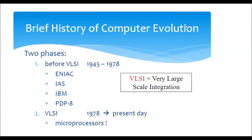Next we have the IAS machine, which was the first electronic computer to be built at Princeton. It was a binary computer with a 40-bit word, storing two 20-bit instructions in each word, and had a memory of 1024 words. The machine was started in 1946 and completed in 1951. It used electrostatic storage devices called Williams tubes, each storing 24 bits.